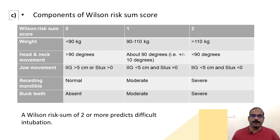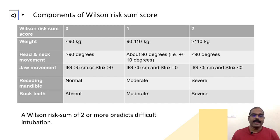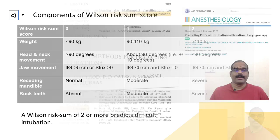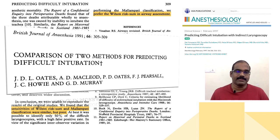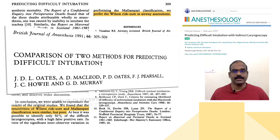The third sub-question was about the components of the Wilson risk sum score. The parameters are: weight, head and neck movement, jaw movement, receding mandible, and buck teeth — each scored 0, 1, or 2. A sum of two or more predicts difficult intubation. An article in the British Journal of Anaesthesia compared Mallampati and Wilson risk sum, concluding that sensitivities were similar but poor; however, due to significant inter-observer variation in performing Mallampati classification, Wilson score was preferred in airway assessment.